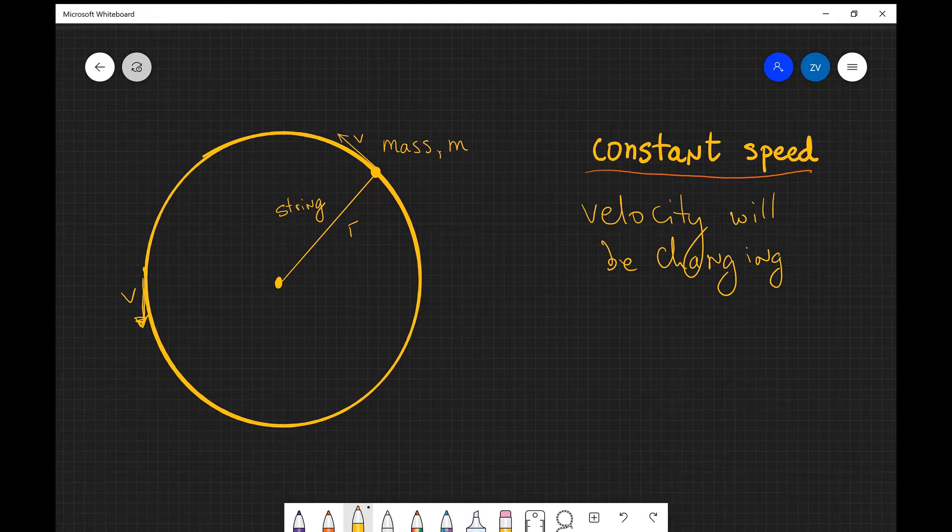Now this is where it gets really interesting. Even though the speed is constant, there has to be an acceleration present. The reason for that is because the velocity has changed, and remember acceleration is the rate of change of velocity. So there has to be an acceleration which changes the direction of this vector from pointing along here to along there and then again and again throughout the continuous motion of this object.